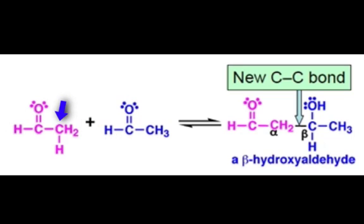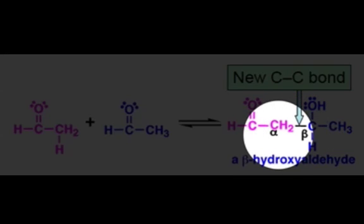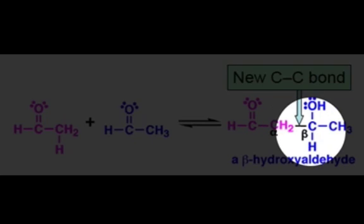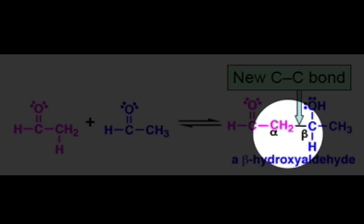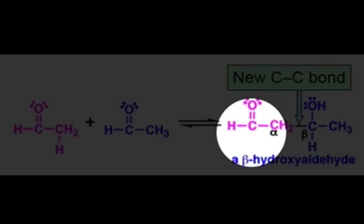In this reaction, the nucleophilic alpha carbon of one molecule of acetaldehyde reacts with the electrophilic carbonyl carbon of the other molecule of acetaldehyde in an addition step. This creates a new carbon-carbon bond between the alpha carbon of our nucleophile and what was the carbonyl carbon of the electrophile, which has now become a beta carbon because it is two carbons away from the carbonyl.